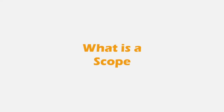Before we learn how a scope chain is created, let's briefly understand what a scope is and what are the different types of scopes we have in JavaScript. We have already learned about scope — global scope, local scope, and block scope in brief — in one of the previous lectures. But since we are going to talk about scope creation in execution context, let's revise what we have learned.